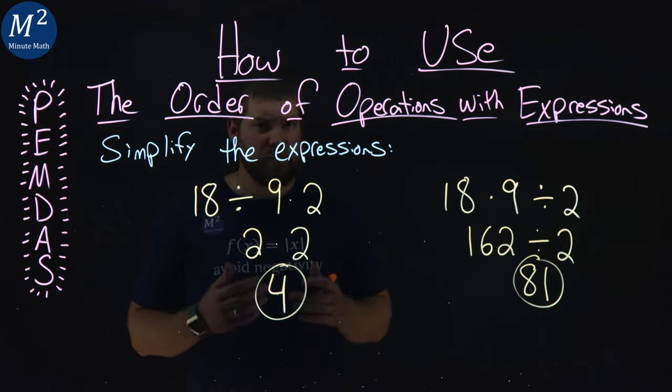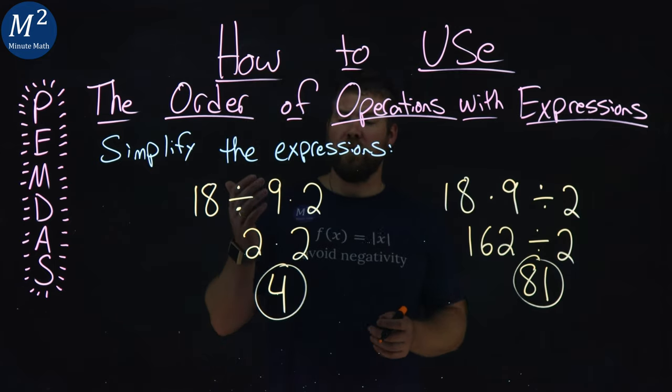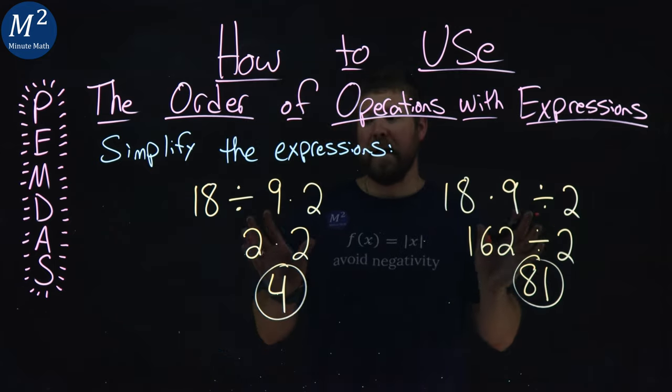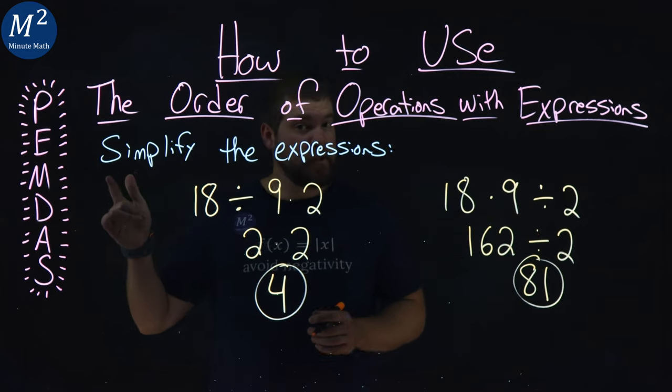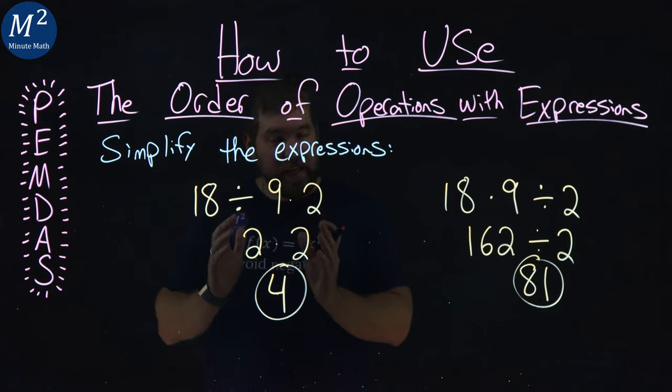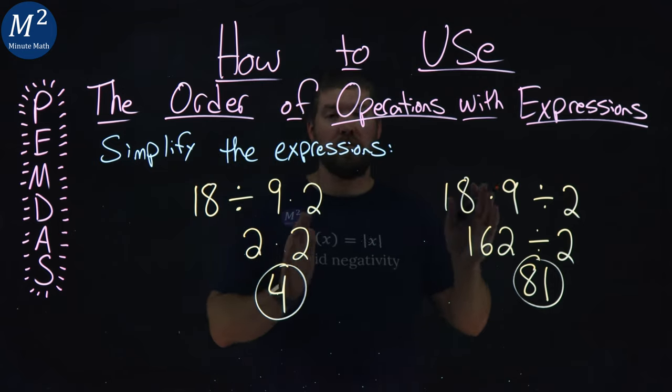And so our two answers here is 4 and 81, and you can see how they're different. And really this comes down to multiplication versus division, and how they're the same class, and you read left to right.